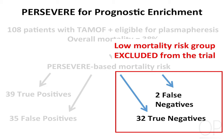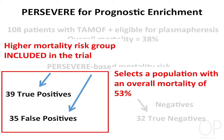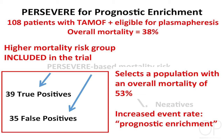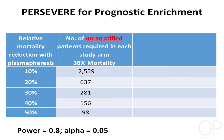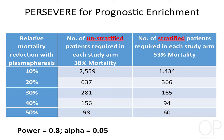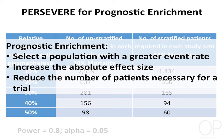In this trial simulation, we would exclude low-risk patients because they have a very low probability of mortality, and include higher-risk patients based on the model. This selects a population with an overall mortality rate of 53% — up from 38%. Assuming a range of plasmapheresis effects with mortality reductions from 10 to 50%, the number of patients required gets reduced by about 40–45% when patients are stratified using the model.